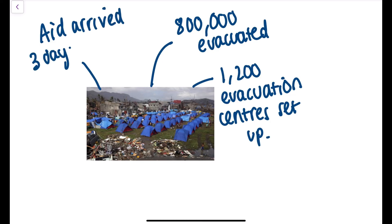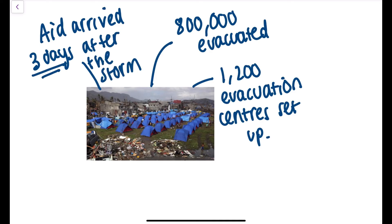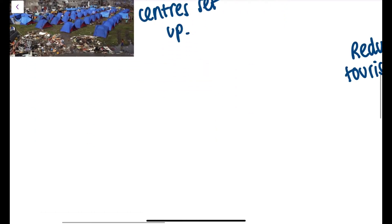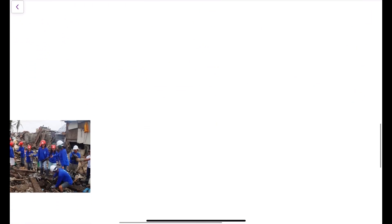Three days after the storm was when the aid arrived, and this is a really significant point. If you are ever asked to evaluate responses to a tropical storm, three days could significantly impact the death toll. In addition, there was $1.5 billion worth of foreign aid to support.